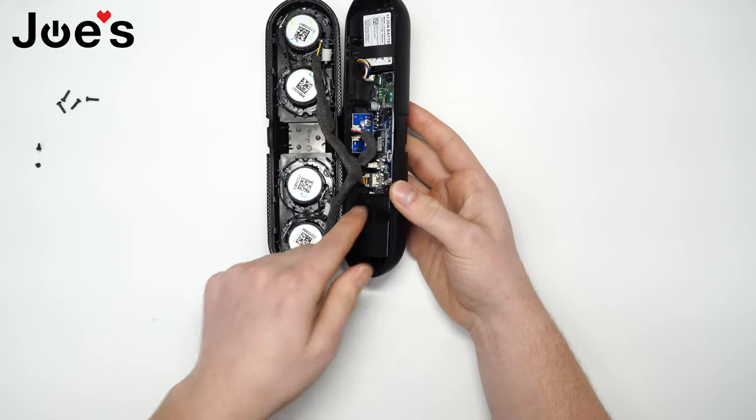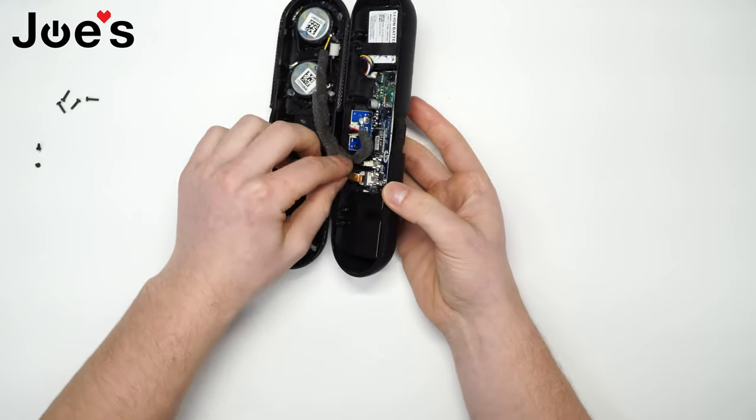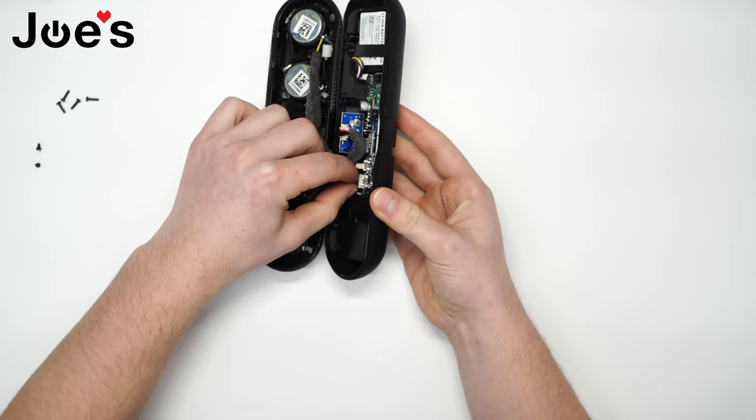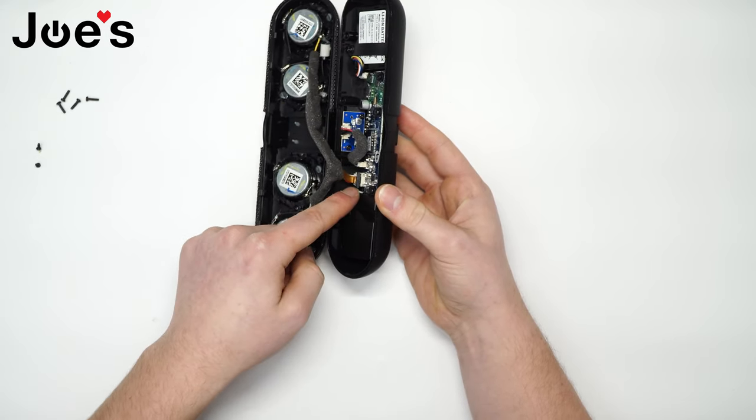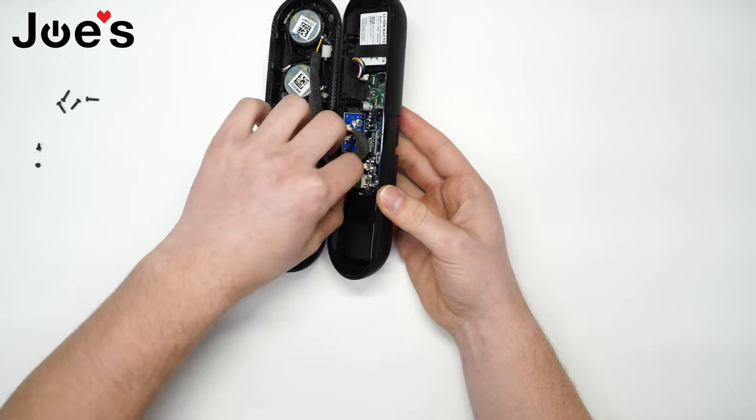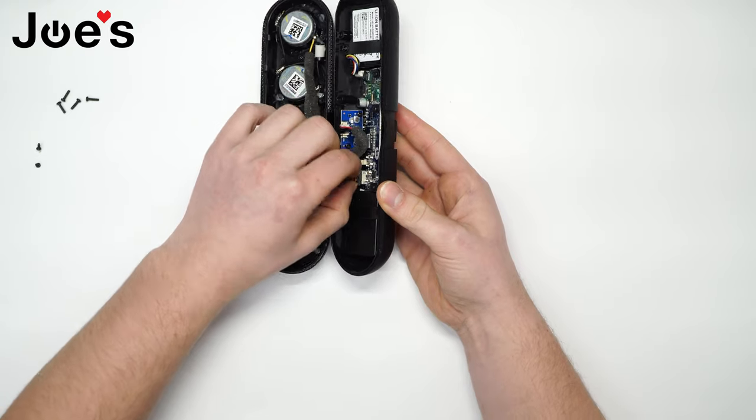First thing you'd want to do is free up this orange looking ribbon. To do that, you just flip open this connector piece. This piece does get broken pretty often, so be careful.